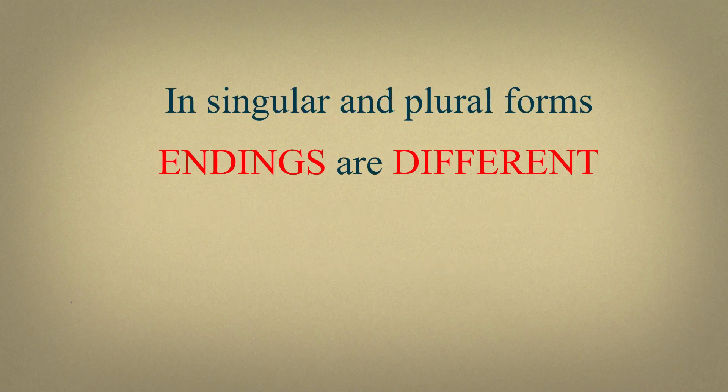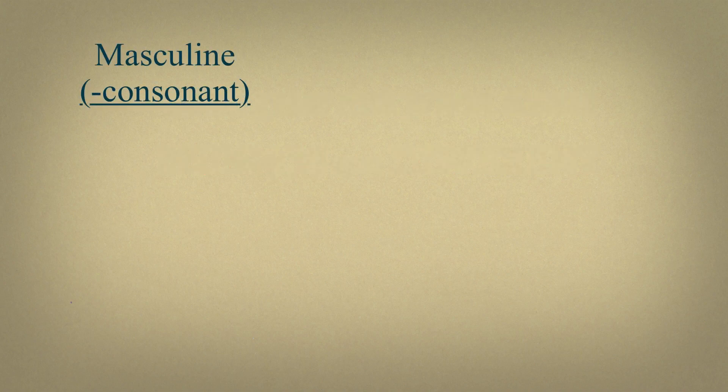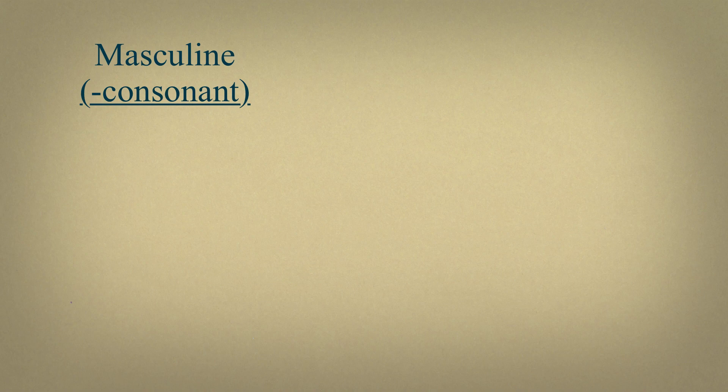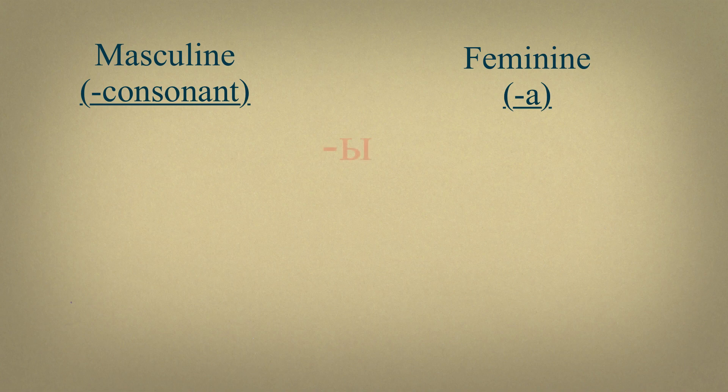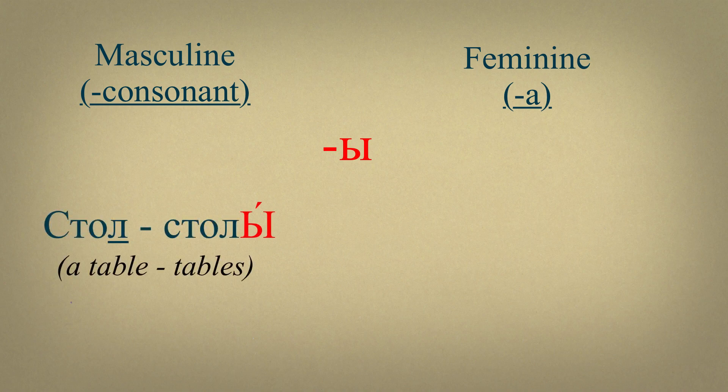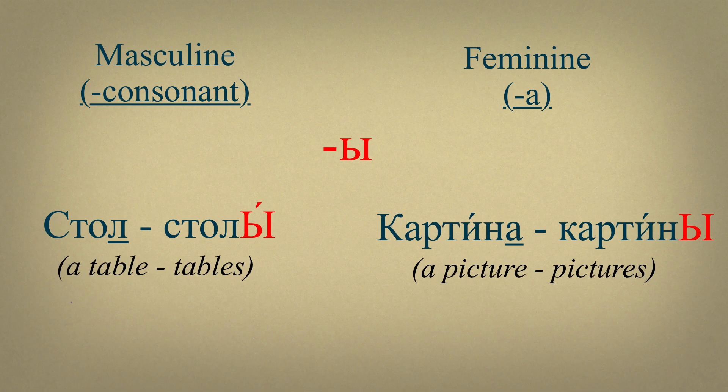In the Russian language, nouns of plural form have different endings than in singular form. Nouns of masculine gender ending in consonant, and nouns of feminine gender with an ending А, in plural form have an ending И. For example, стол, столы, картина, картины. Стол is masculine gender, and картина is feminine.